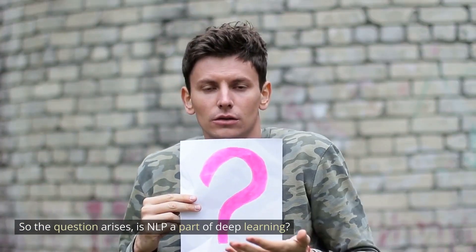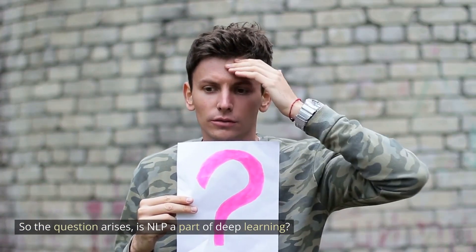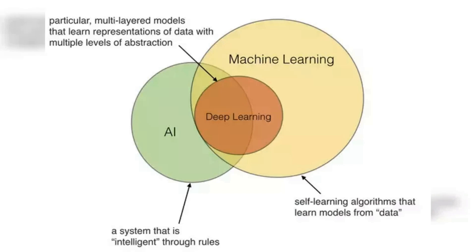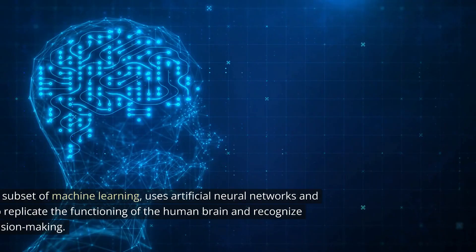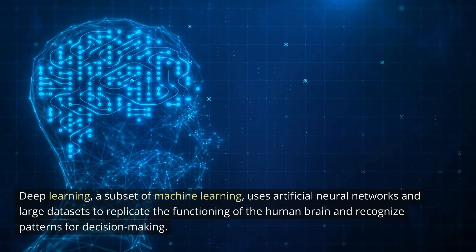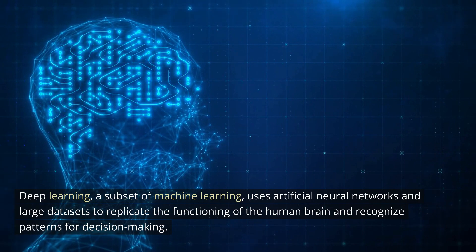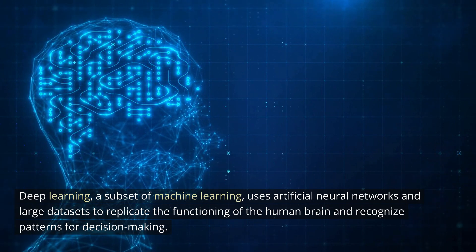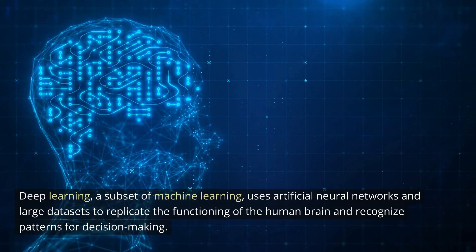So the question arises: is NLP a part of deep learning? The diagram below illustrates the interconnectedness of artificial intelligence, machine learning, natural language processing, and deep learning. Deep learning, a subset of machine learning, uses artificial neural networks and large datasets to replicate the functioning of the human brain and recognize patterns for decision-making.